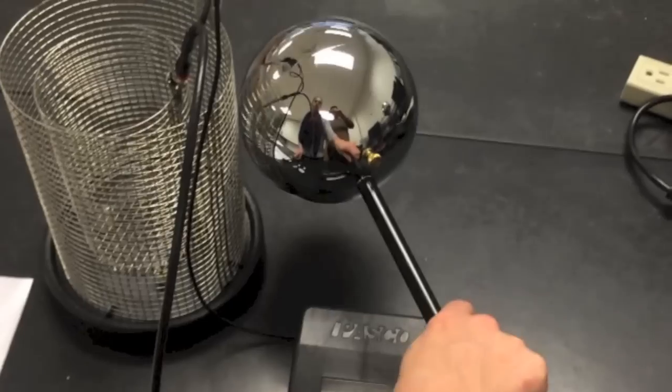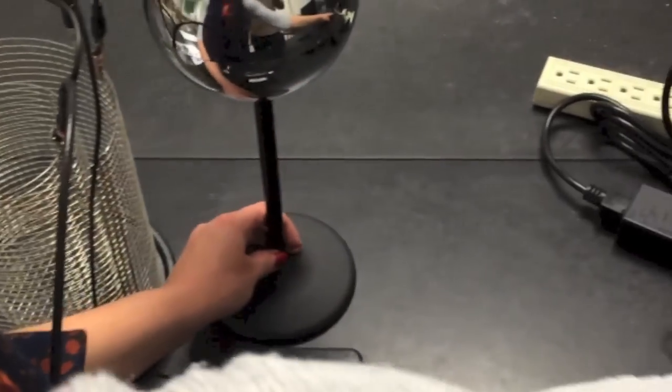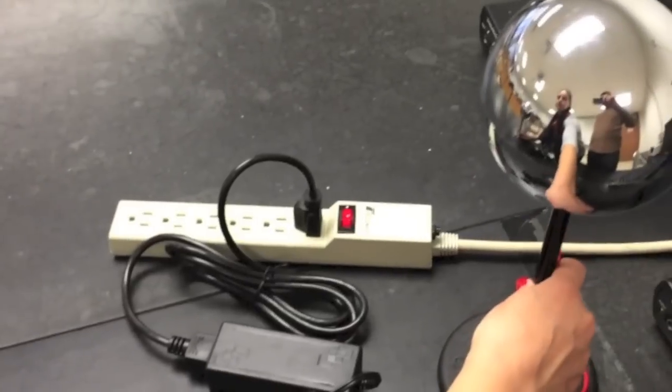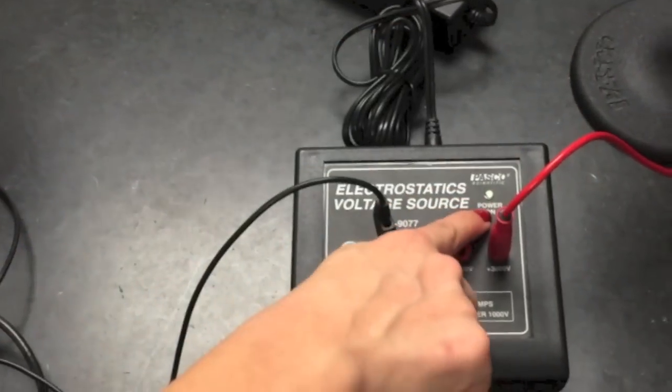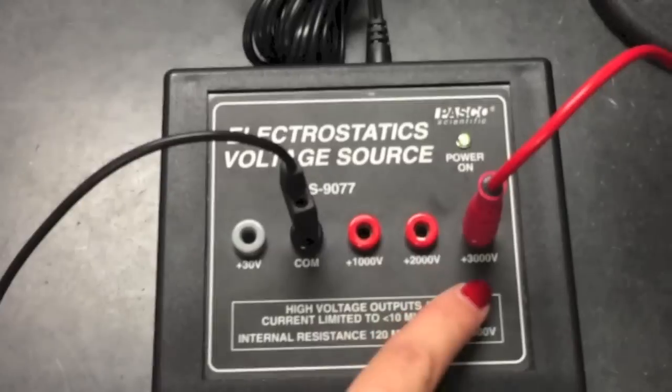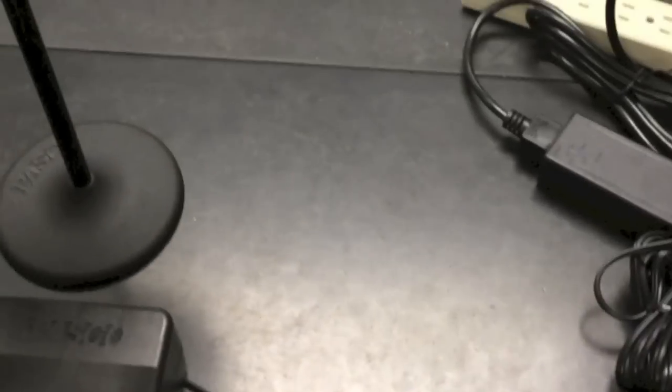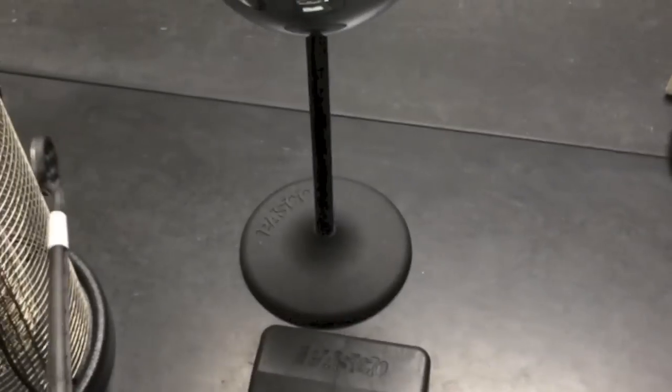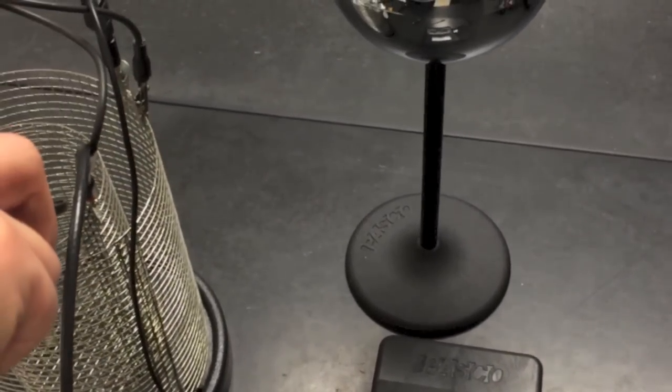Now discharge everything again. Discharge the sphere and place it 50 centimeters away from the sphere that is connected to the electrostatic voltage source. Turn the source on. Make sure that the sphere is connected to 3000 volts. Now we are going to see if we can induce a charge on this sphere at 50 centimeters distance. Use the probing wand and check—there is nothing. They are really far away from one another.